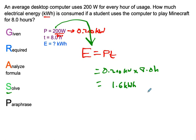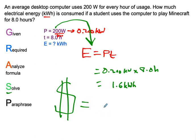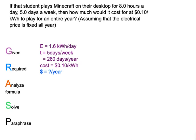It's not always this simple, because most electrical energy questions have you calculating how much it's going to cost. So in the next example we answer that mighty question — what is the cost? To get the dollar amount, you take your energy usage and multiply it by your rate — your electrical bill rate — in dollars or cents per kilowatt hour used. Part B: if that student plays Minecraft on their desktop for eight hours a day, five days a week, how much would it cost at $0.10 per kilowatt hour to play for an entire year?